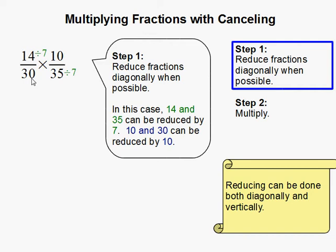So when we reduce, we divide both 14 and 35 by 7. That gets us 2 here and 5 here.